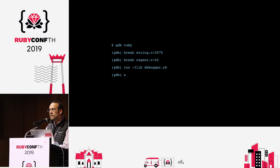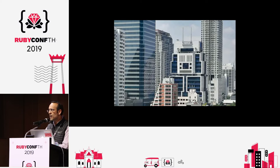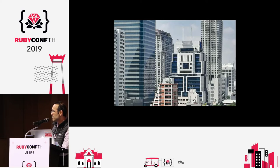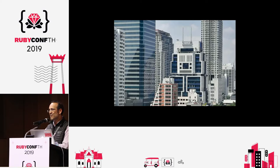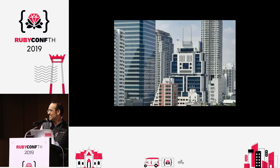GDB was written in 1986 by Richard Stallman. Around that same time, Sumit Jumsai architected the robot building — my dad pointed me to this one. It was built for Bank of Asia to signify computers in the world of banking. How many of you saw this in the video they showed us on the first day?